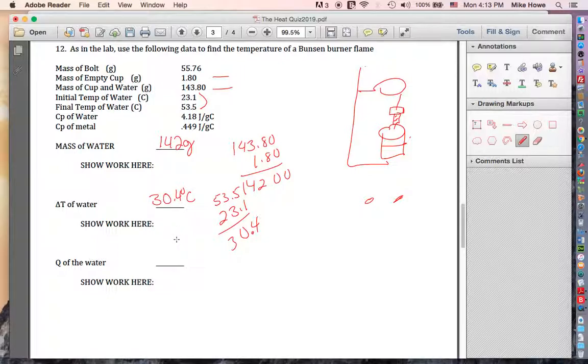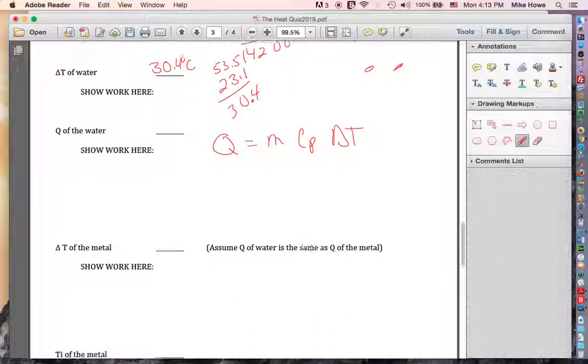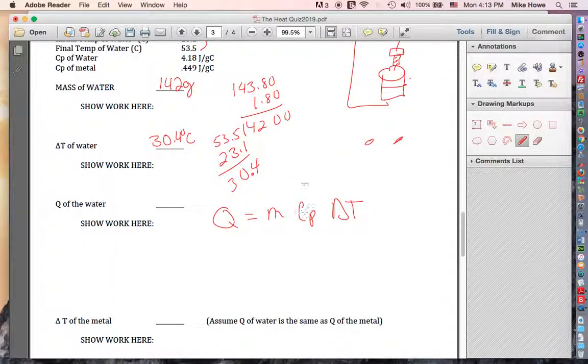So now we're ready for Q of the water. Was there a temperature change? 30.4. So you're going to use that formula. Q is equal to M Cp times temperature change. So what was M in this case? That was the mass of the water. We just found that out. 142 grams.